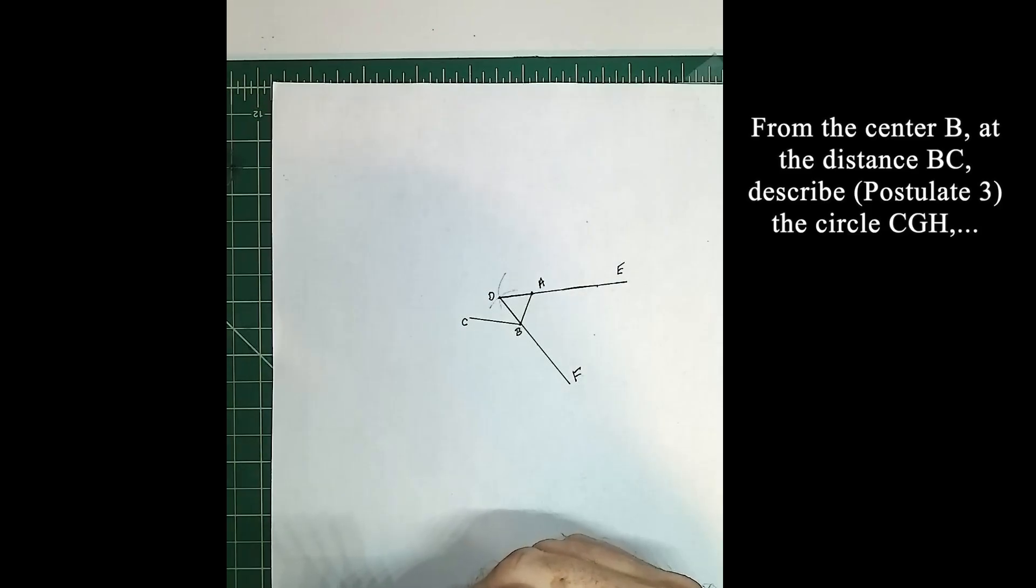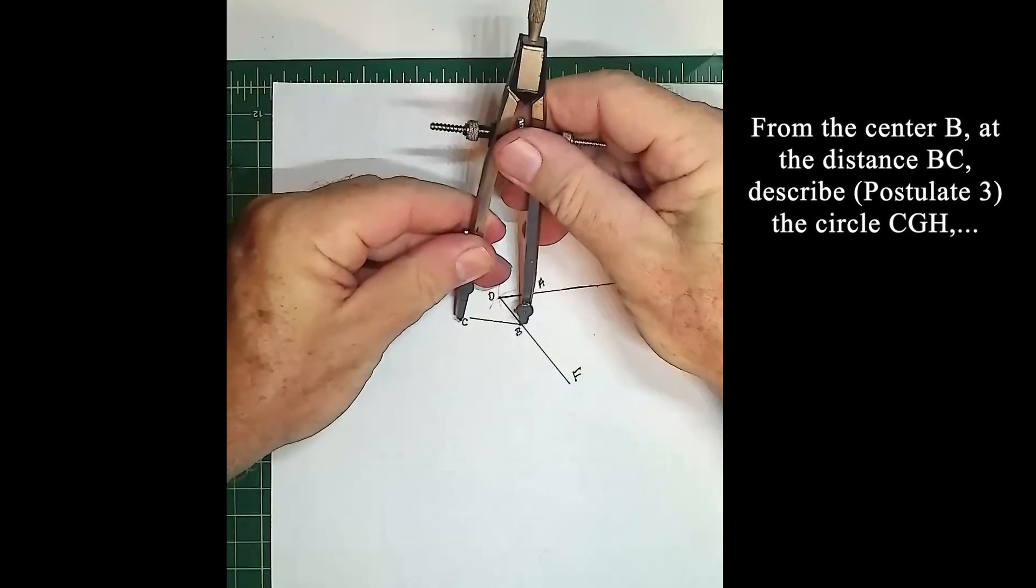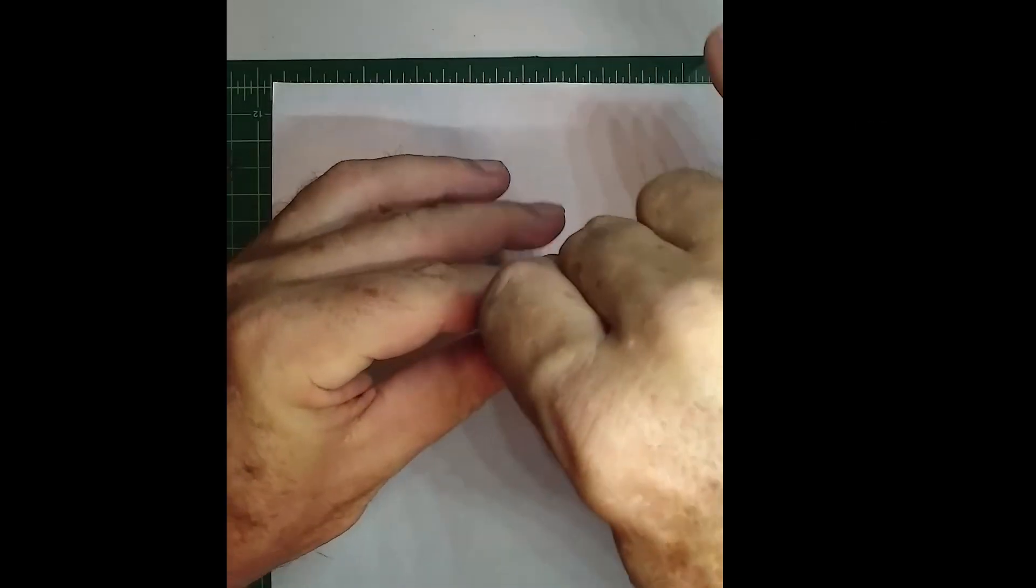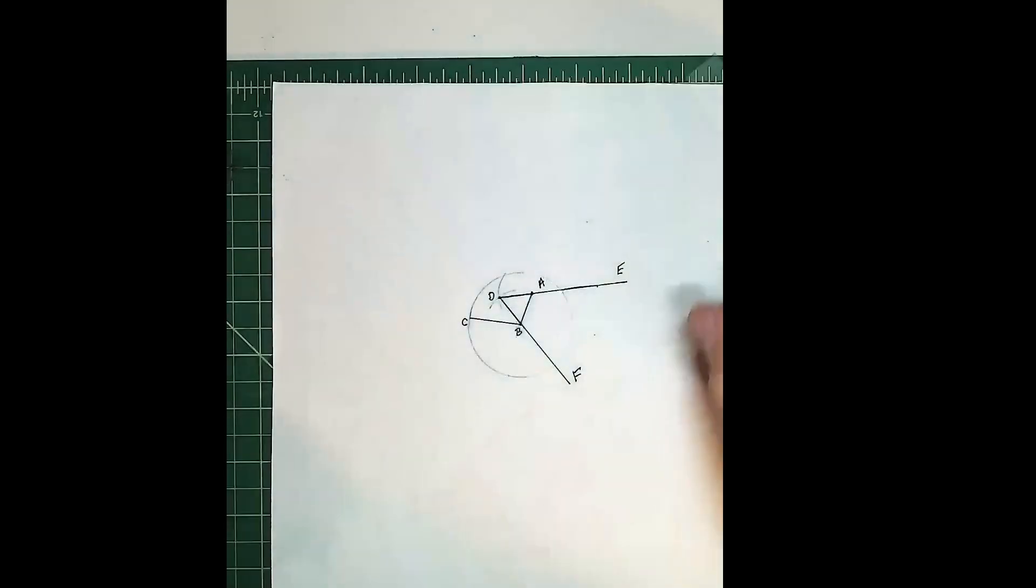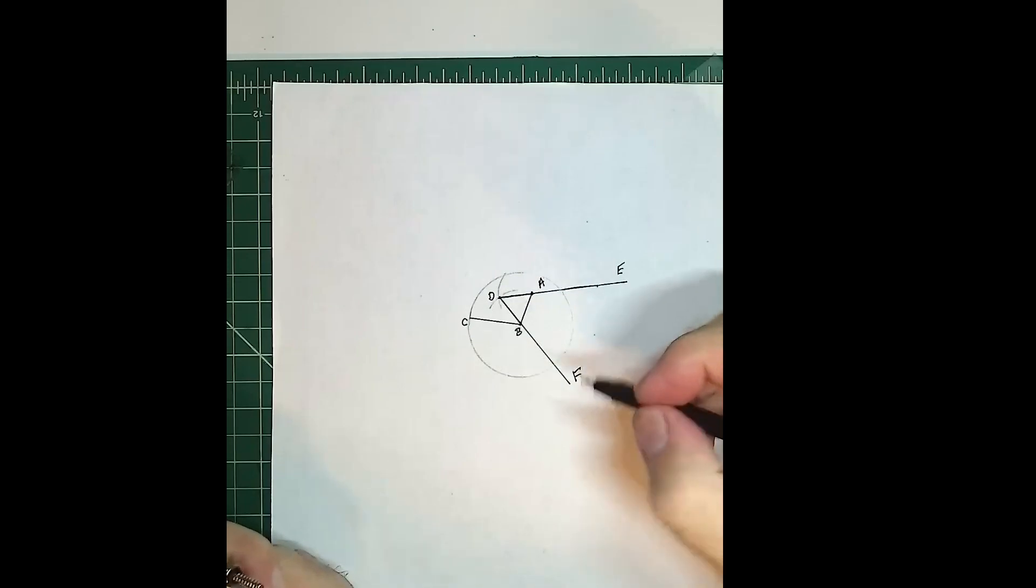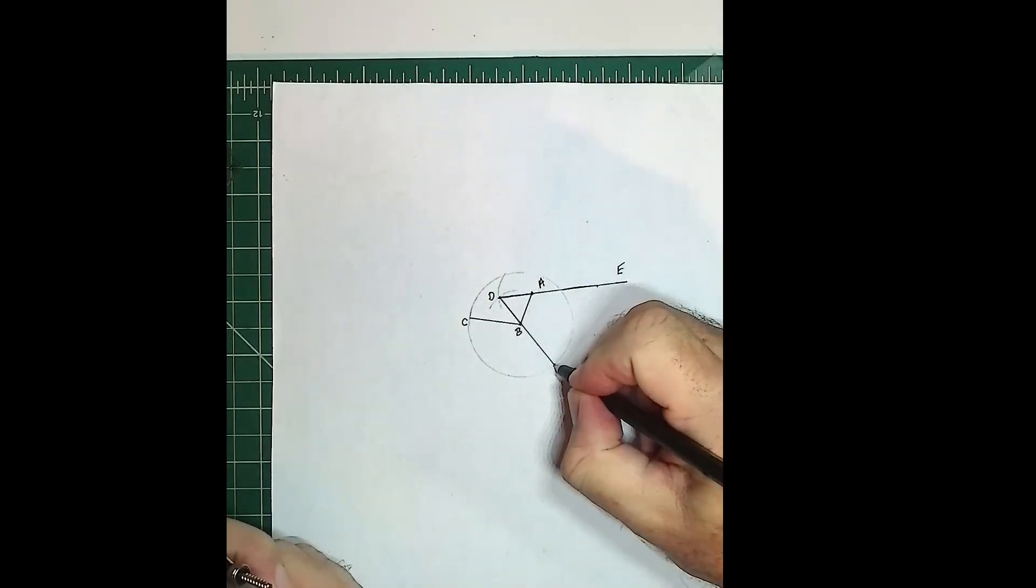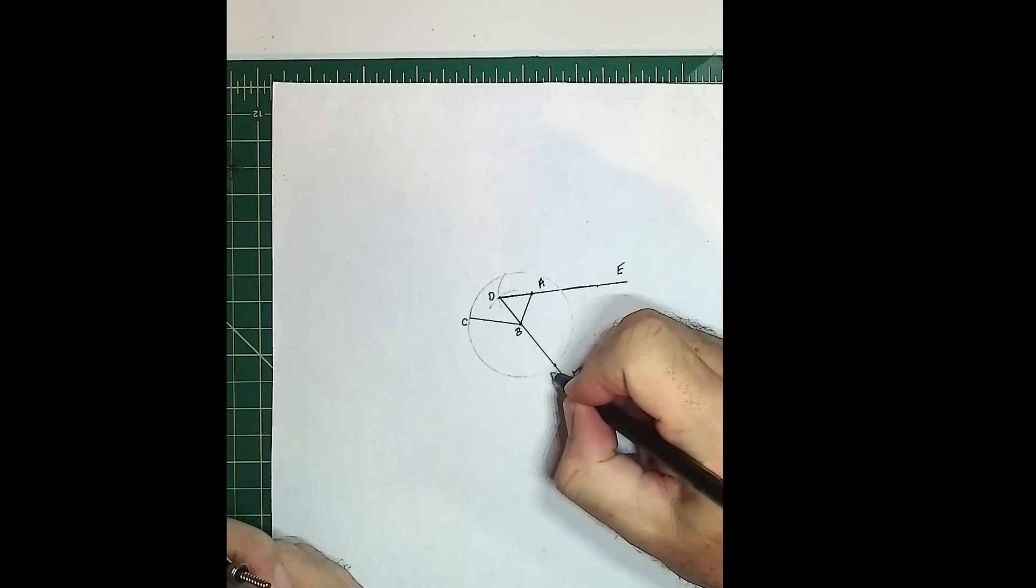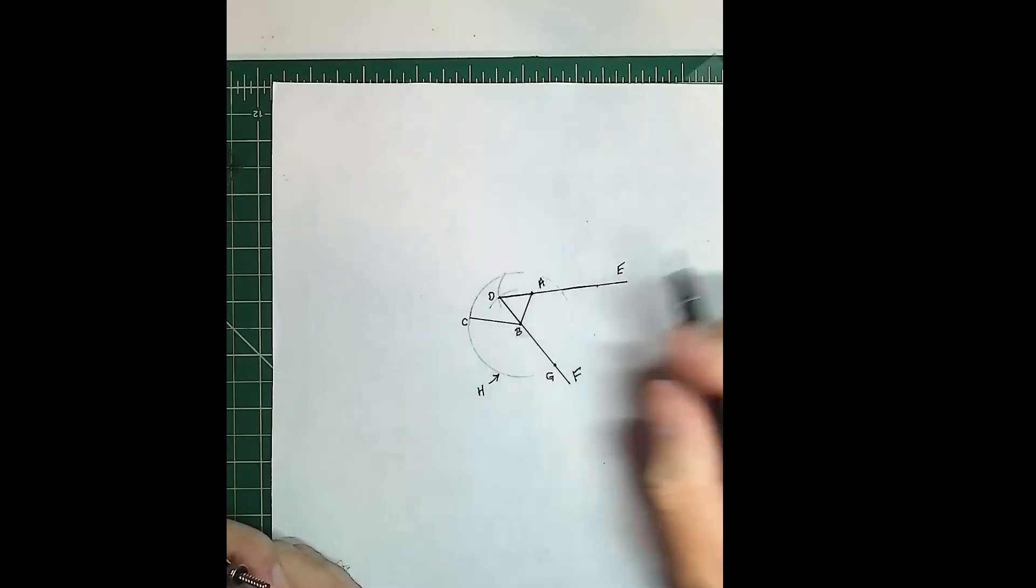From the center B at the distance BC, describe the circle CGH. So we are going to center at B. The circles don't have to be as dark as the lines, the circles are just guides. So we have that circle and where it intersects down here - this particular point is G, and the circle itself we're going to call H.